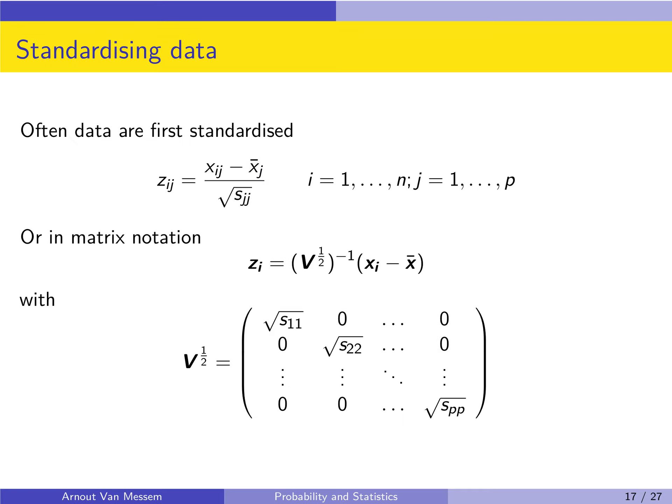In practice, data are often first standardized before applying principal component analysis. Standardization means subtracting the mean and dividing by the standard deviation. To do this in R is very easy: use prcomp with the additional option scale equal to TRUE, and the function will perform the standardization itself — the user does not need to do anything special.